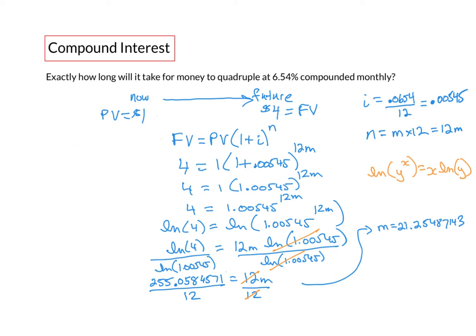We would end up with m equal to 21.25487143. So what this is saying is it takes 21 and a bit years for our money to quadruple. But we want to know the exact time it takes to quadruple. We can figure that out by splitting this value.